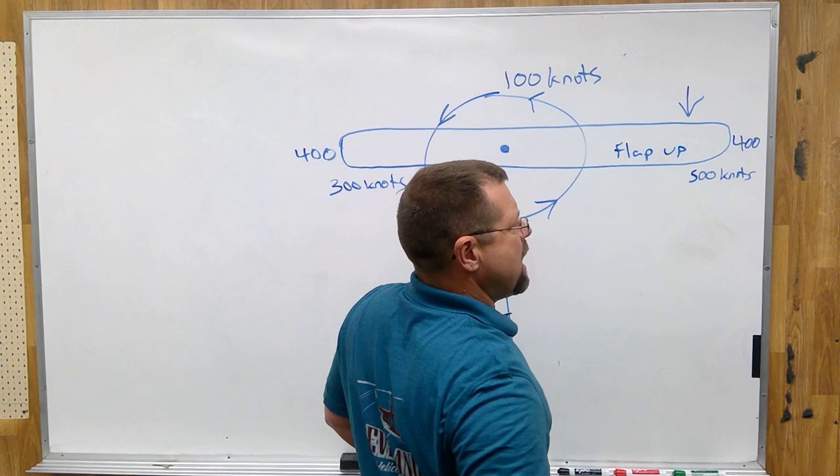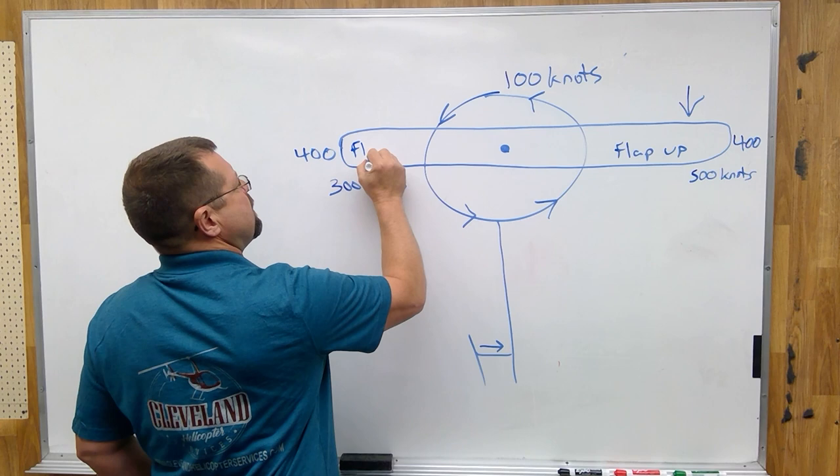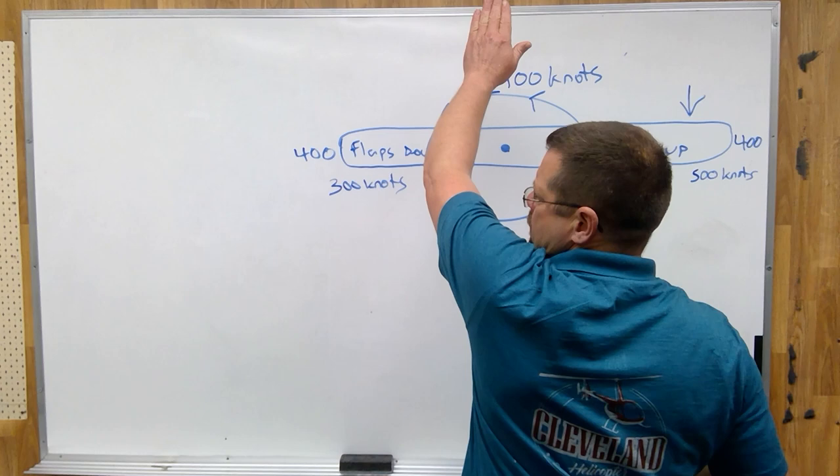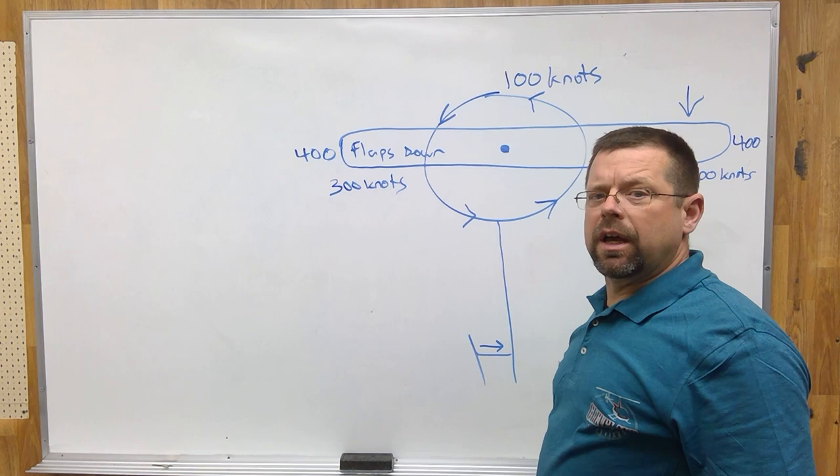It flaps up in order to decrease the angle of attack. The retreating blade flaps down in order to increase the angle of attack, thus creating equal lift as a helicopter is in forward flight.